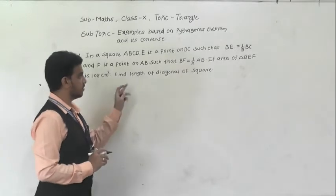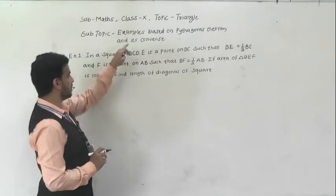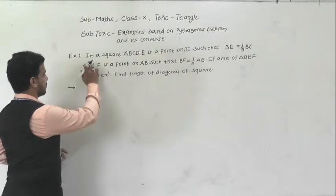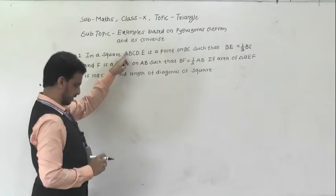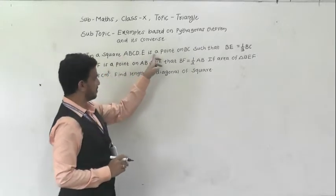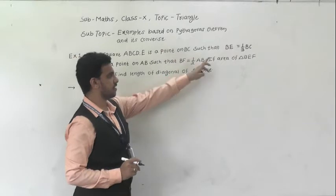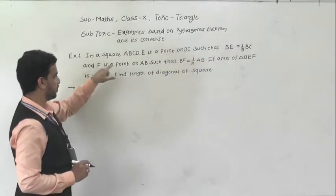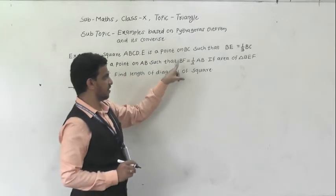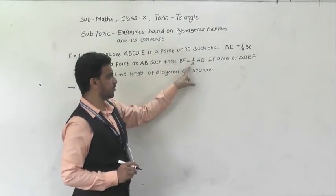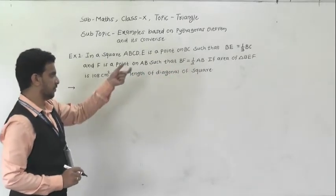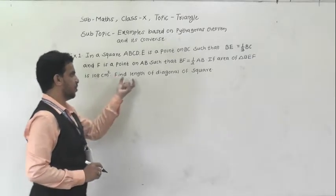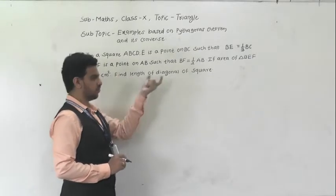Now we will solve examples based on Pythagoras theorem and its converse. First example: in a square ABCD, E is a point on BC such that BE is equal to one third of BC, and F is a point on AB such that BF is equal to half AB. If area of triangle BEF is equal to 108 centimeter square, find the length of the diagonal of the square.